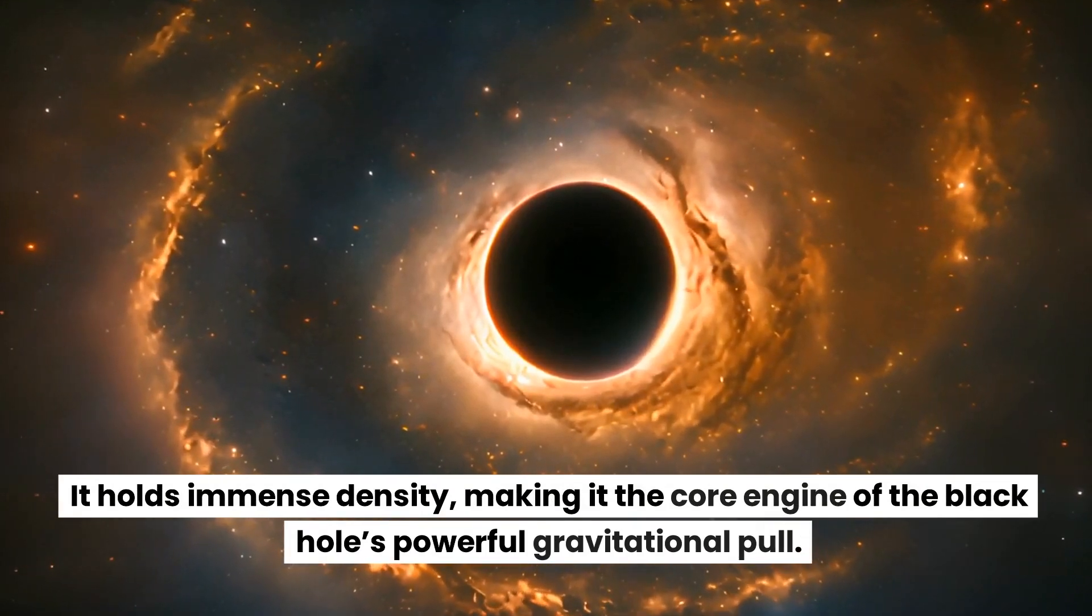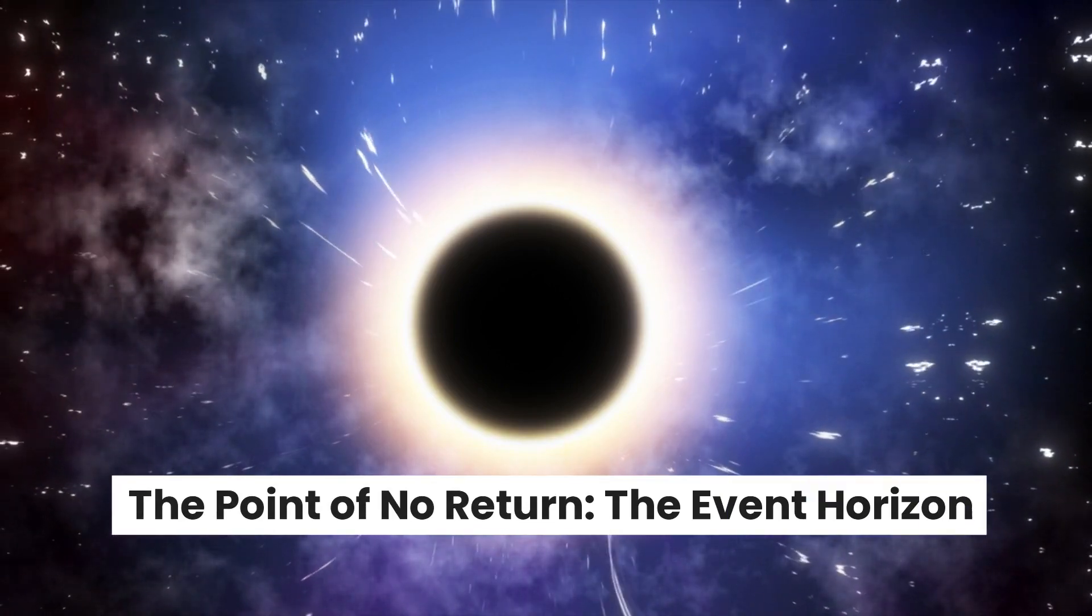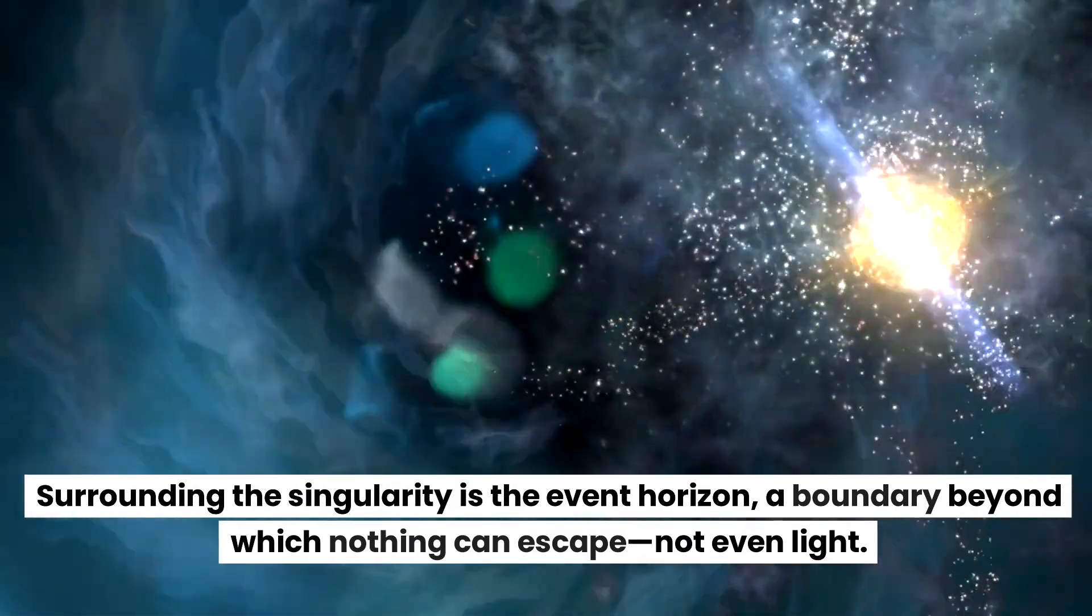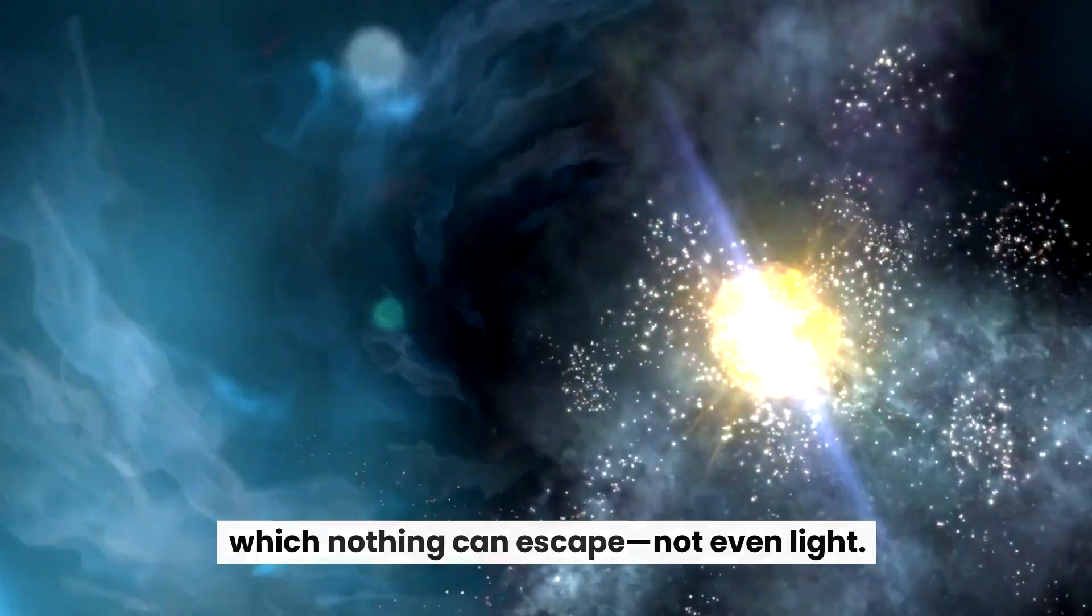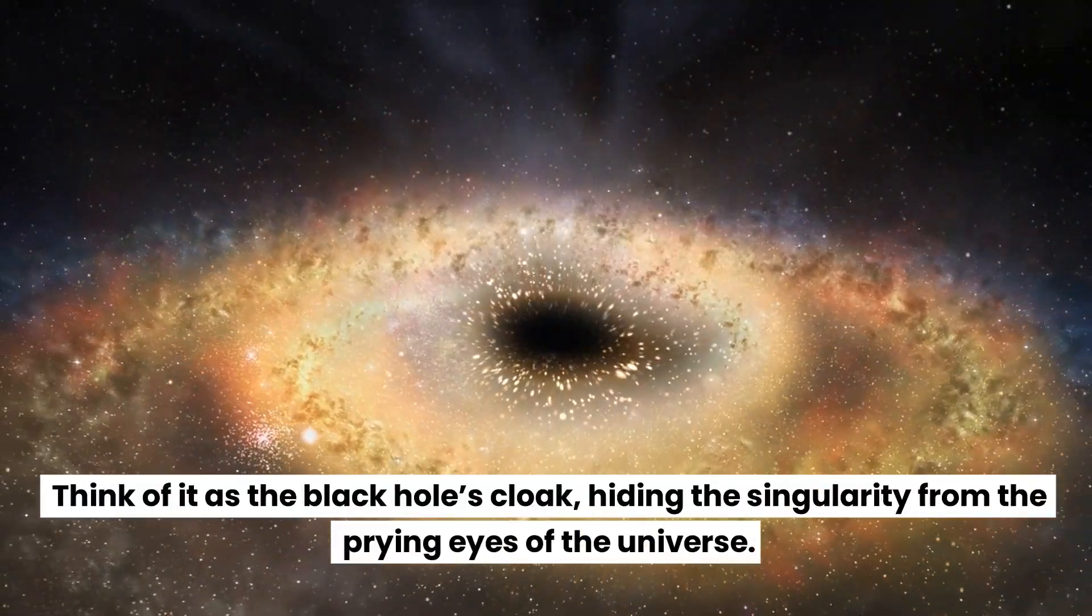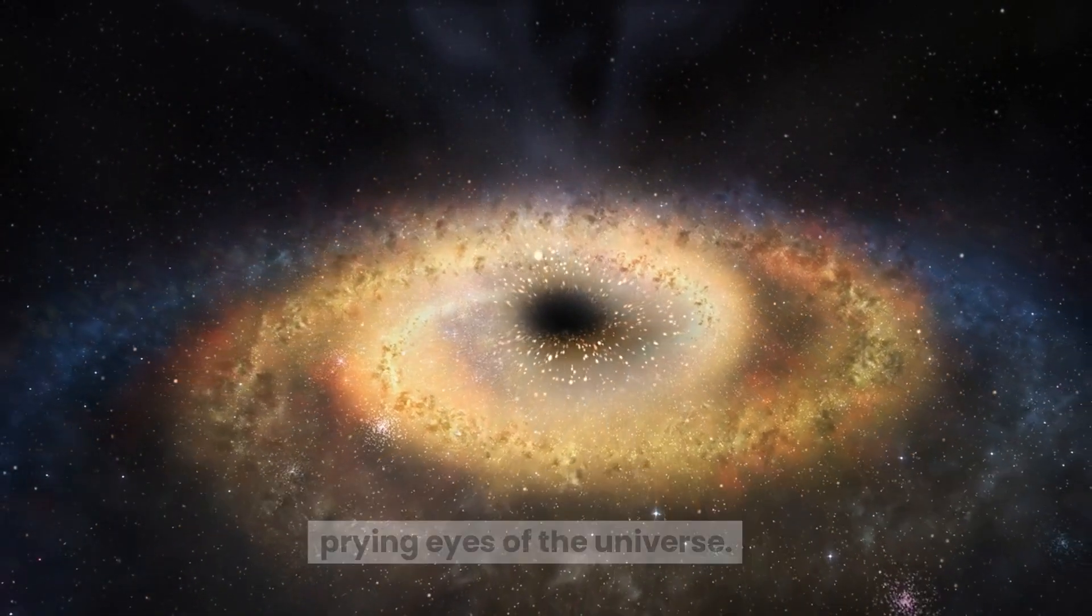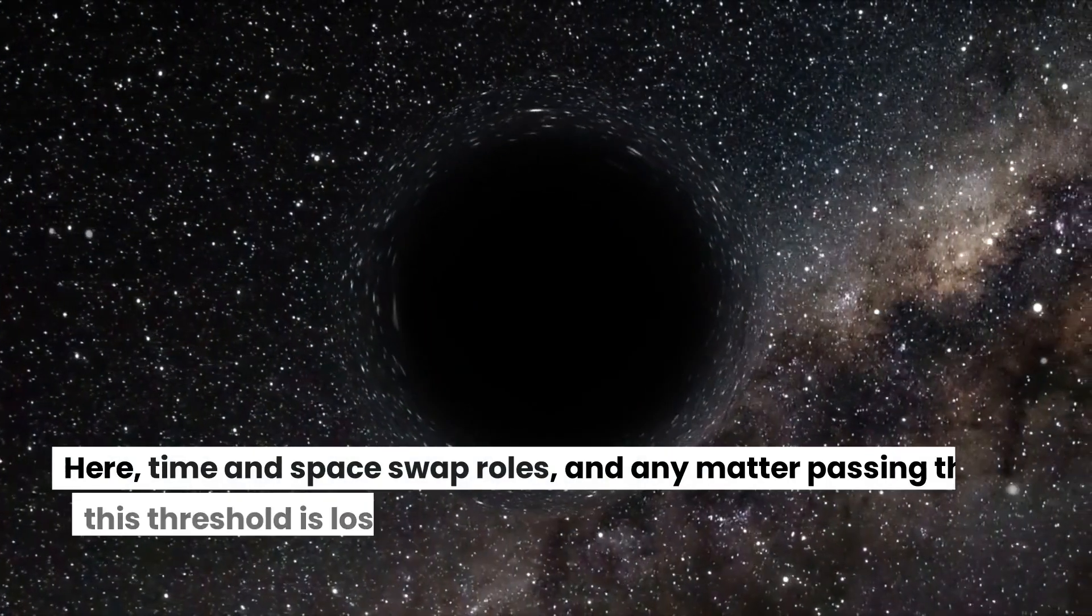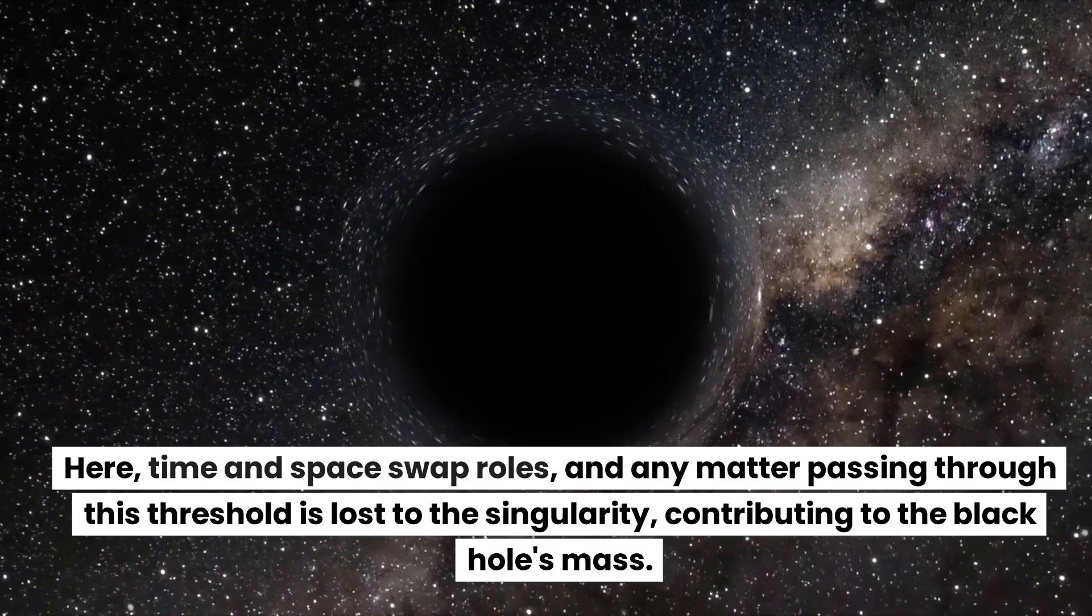The point of no return: the event horizon. Surrounding the singularity is the event horizon, a boundary beyond which nothing can escape, not even light. Think of it as the black hole's cloak, hiding the singularity from the prying eyes of the universe. It's the point where the escape velocity exceeds the speed of light. Here, time and space swap roles, and any matter passing through this threshold is lost to the singularity, contributing to the black hole's mass.